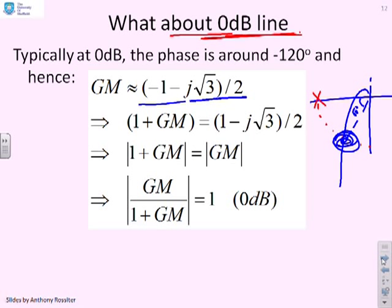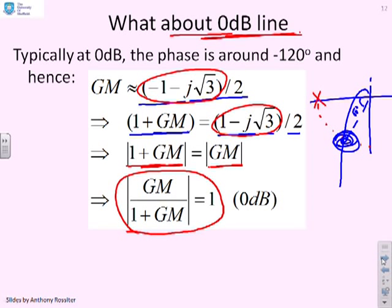If I then do 1 plus GM, you get this 1 minus j root 3 over 2. The key thing here is to compare this number and this number. What you'll see is they've got the same amplitude. So the modulus of 1 plus GM is the same as the modulus of GM. So GM over 1 plus GM modulus is 1 or 0dB.